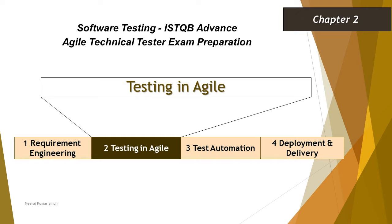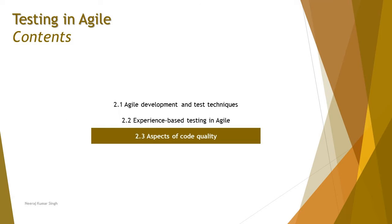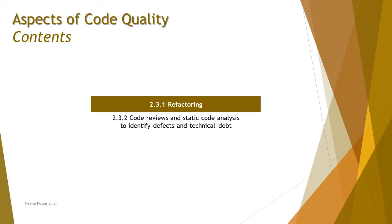Hello friends and greetings for the day. Welcome back to another tutorial on ISTQB Advanced Agile Technical Tester. We are in Chapter 2, now moving to the third segment, 2.3 Aspects of Code Quality, where the first tutorial is about refactoring of code.